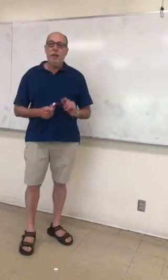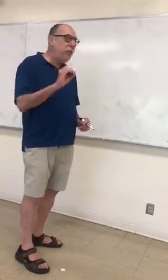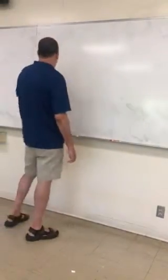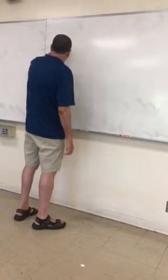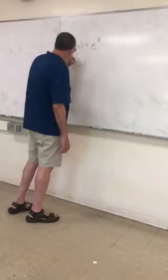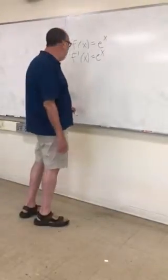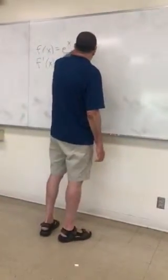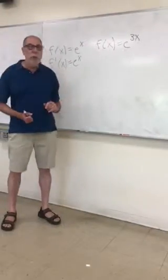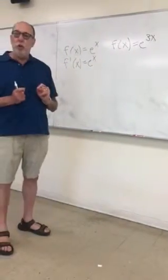Today we're going to look at something in calculus called the chain rule. The chain rule is meant to differentiate something that's more complicated than the things we usually differentiate. For example, if we have a function f of x equals e to the x, the derivative is simply e to the x. But what if we have something a little more complicated? Suppose we have f of x equals e to the 3x. Right now we don't have any rules that account for something this complicated, so there is something called the chain rule.